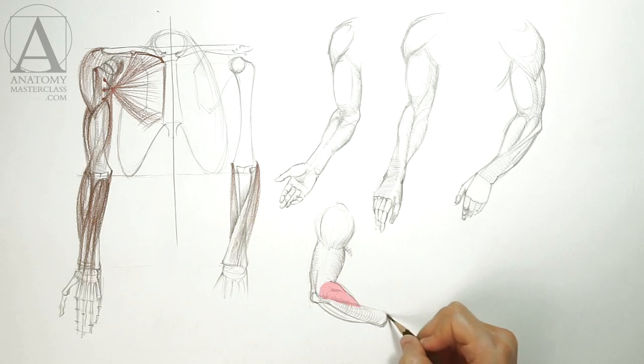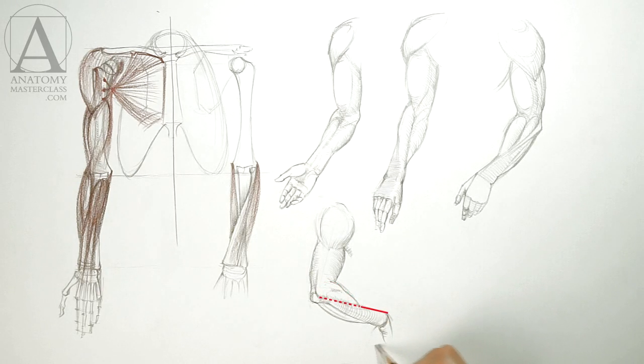Above the radius line in the upper half of the forearm is the mass of the extensor group muscles. In the lower half, the outline of the arm follows the radius bone.